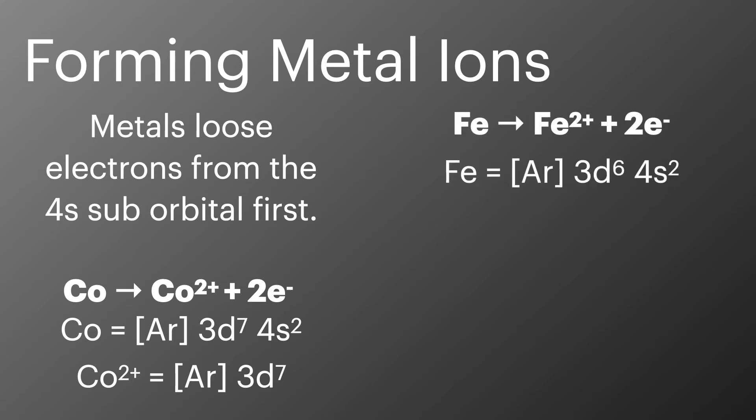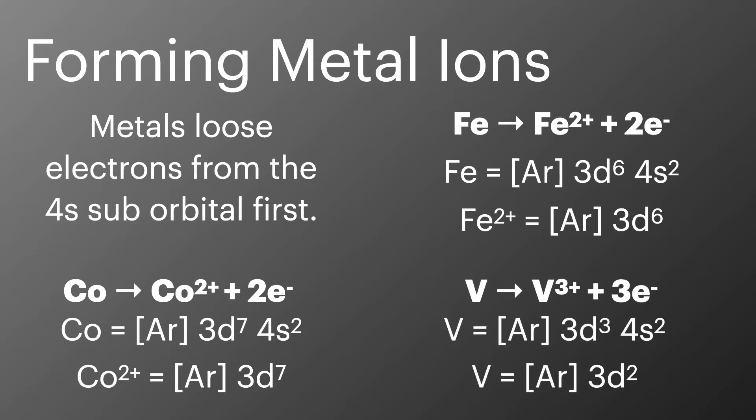For iron forming iron 2+, it does exactly the same. And then for vanadium becoming vanadium 3+, it loses two electrons from the 4s subshell so that disappears, and then the final electron from its 3d subshell.